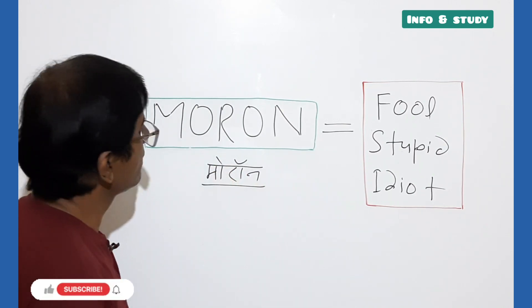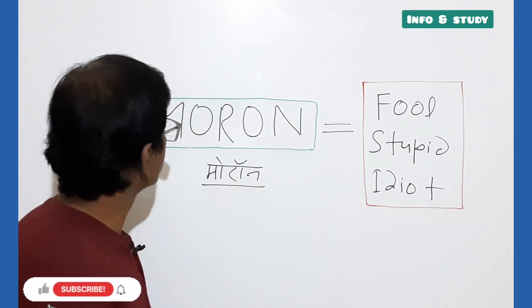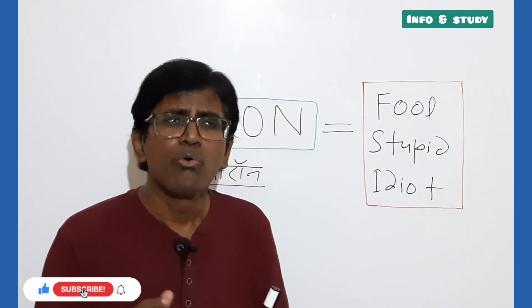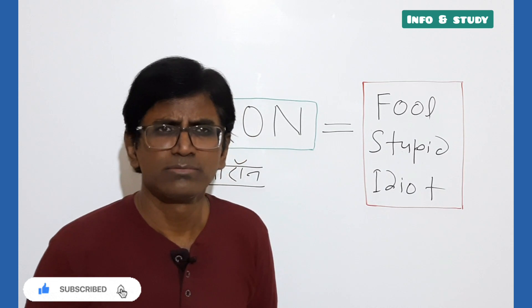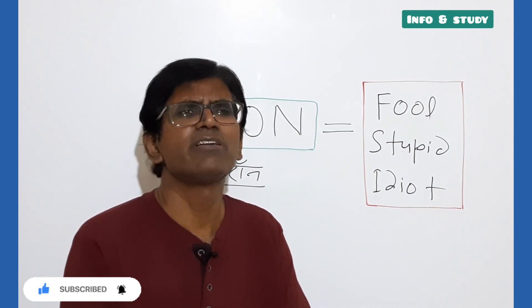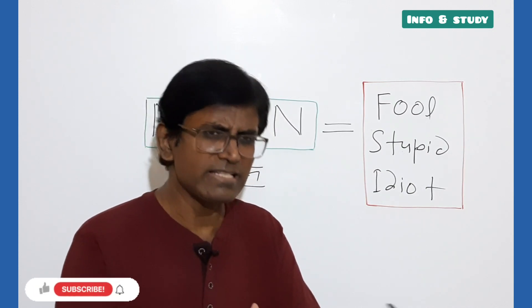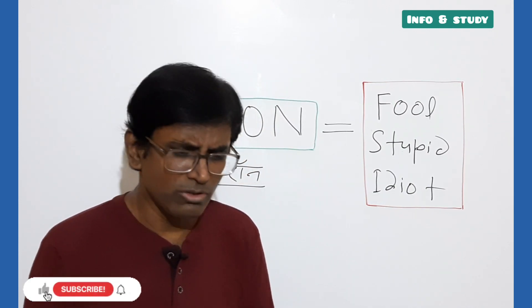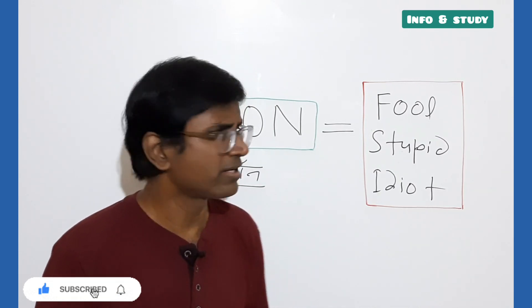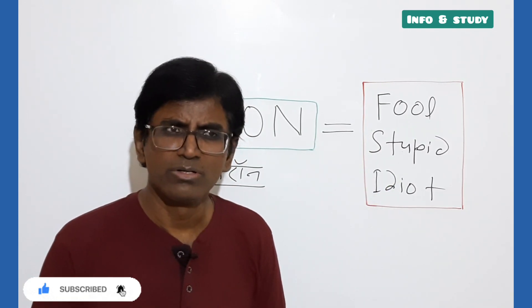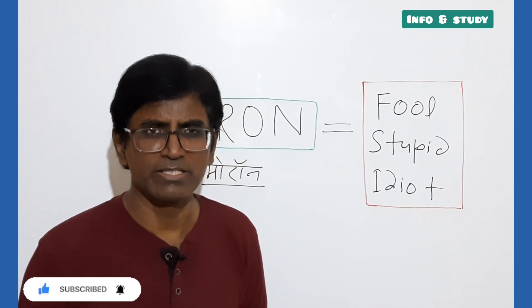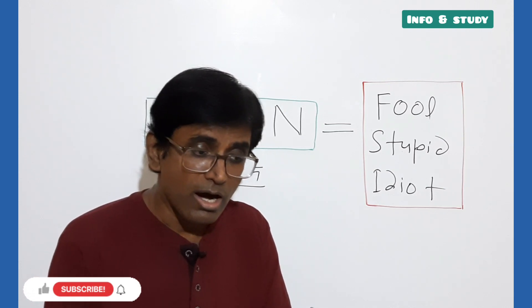Theek hai, is tarah se isko bolenge. Ab main kahun, why are you behaving like a moron? Ek murk ki tarah kyun behave kar rahe ho? Why are you behaving like a moron? You are an intelligent person. Yaar tum to bahut intelligent ho, lekin abhi kyun moron ki tarah behave kar rahe ho, stupid ki tarah behave kar rahe ho? Haan, to aapko aise use karna hai sentence mein, theek hai.